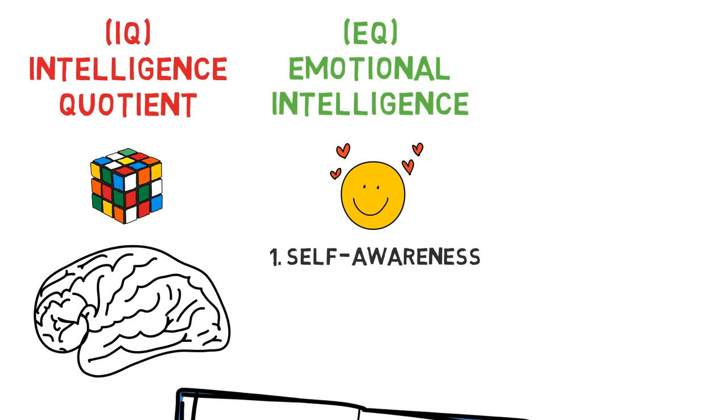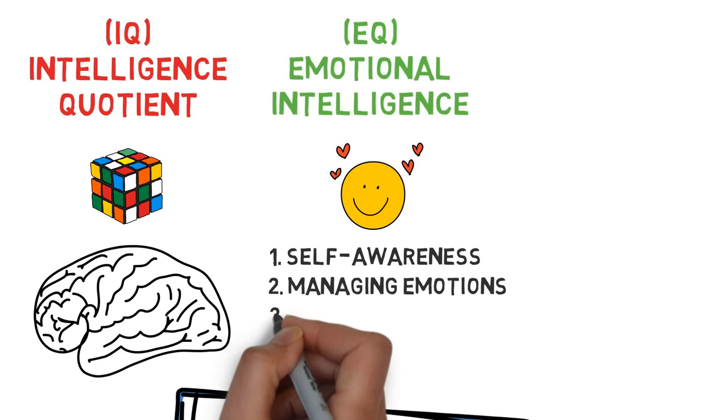Number one, self-awareness. This is knowing one's emotions as they happen. If you can do this, you'll make better decisions. Number two, managing emotions. This is the ability to handle feelings. People that can manage their emotions are good at bouncing back from the setbacks in life.